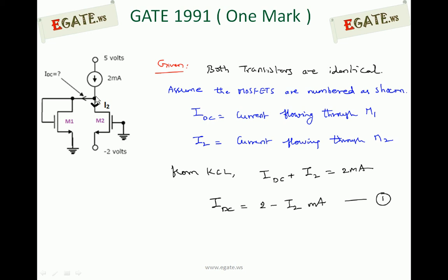Applying KCL at the node, we can write IDC + I2 = 2 mA, or equivalently IDC = 2 − I2 mA. If we calculate I2, we can then calculate IDC using this equation. So our aim now is to calculate I2, the current flowing through transistor M2.